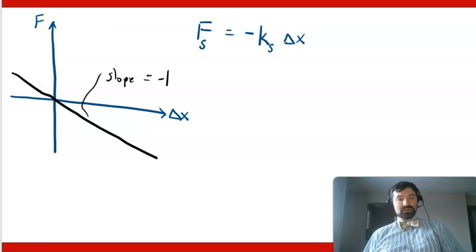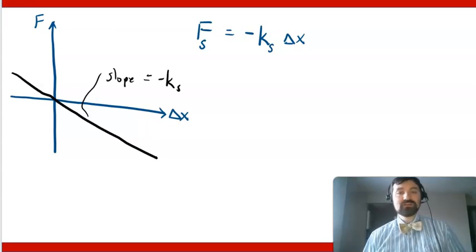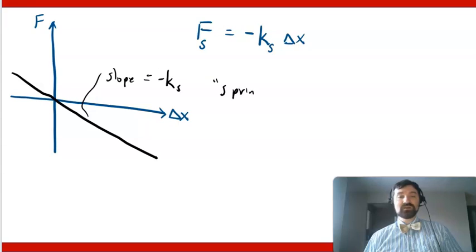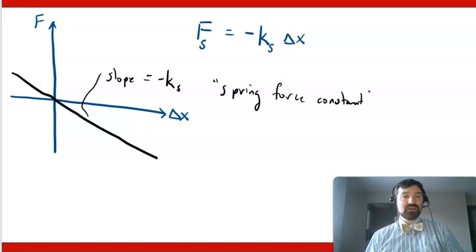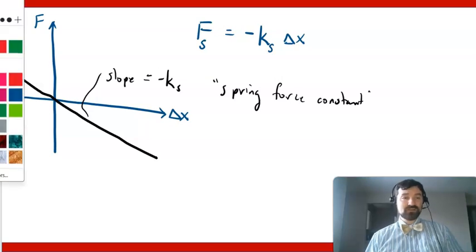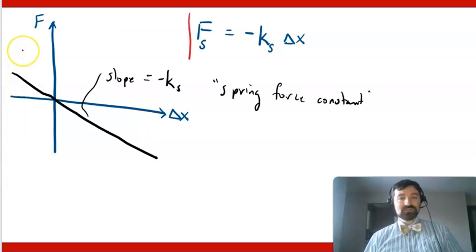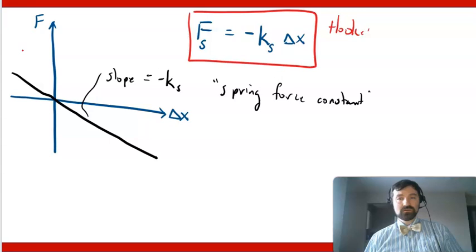slope equals negative k. This is what's called spring force constant, or sometimes spring constant. And this equation, F equals negative k delta x. This is what is called Hooke's law.